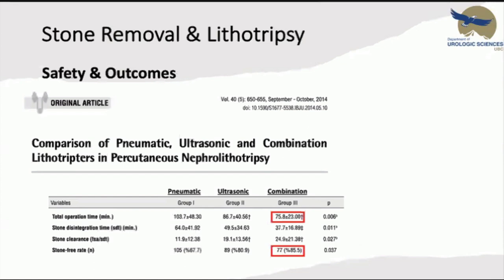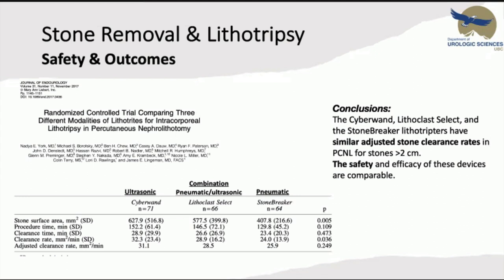A study comparing pneumatic, ultrasonic, and combination probes found that the combined ultrasonic-pneumatic probe disintegrates stones faster, shortening total operative time, with faster stone clearance in the combination group. A randomized controlled trial at nine North American centers randomized patients to one of three lithotriptor devices: the CyberWand ultrasonic combination, the pneumatic-ultrasonic Lithoclast, or the pneumatic stone breaker. All three modalities had similar adjusted stone clearance rates; safety and efficacy of these devices are comparable for PCNL stones more than 2 cm.